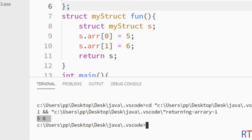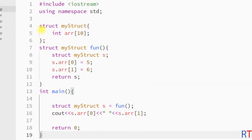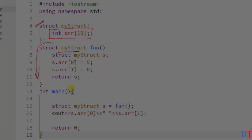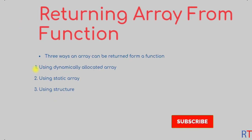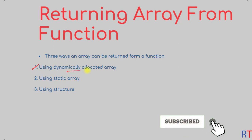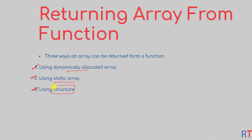So this way we can use a structure that has an array as a member element and return that array from the function. In summary, we can either use a dynamic array, a static array, or a structure to return an array from a function. Hope you understand the concept — see you in the next one, thank you.